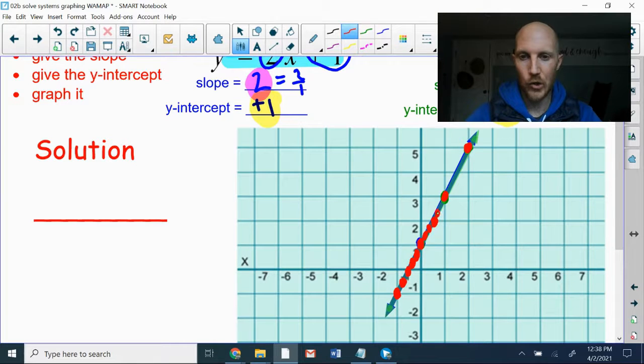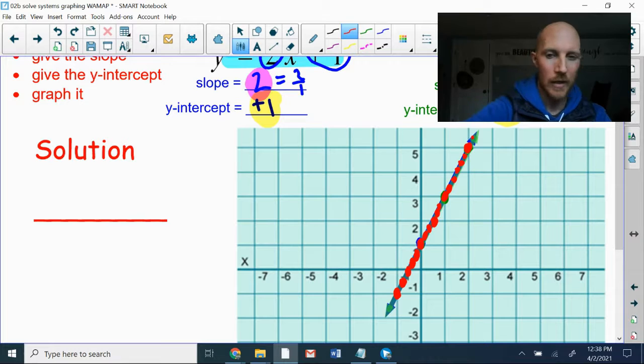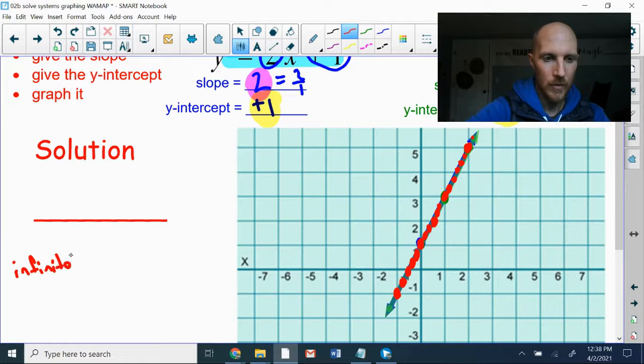So there are so many points I could draw. If I tried to count them all, I'd never get done. There's so many points, an infinite number of points where these two lines touch. And now I've totally turned this into like a red line. It used to be a blue and a green.